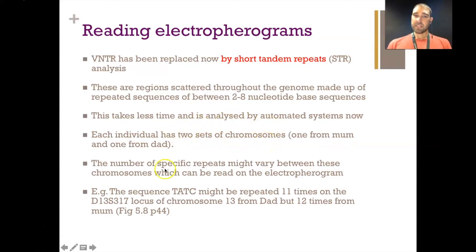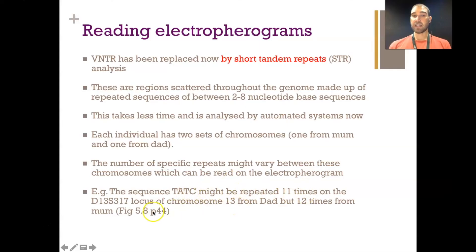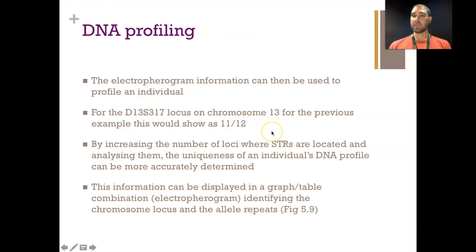You get two sets of chromosomes — one from mum and one from dad. The number of specific repeats at each location could be the same or different between your mum and your dad. For example, the sequence TATC might be repeated 11 times at a locus on chromosome 13 from your dad, but 12 times from your mum — represented as 11/12. The location of these STRs and the numbers of repeats from each parent can be put into tables, and from those tables we can make graphs. The more loci you look at, the better you can compare between two individuals.